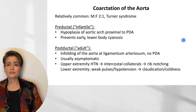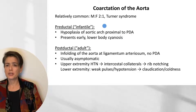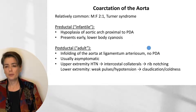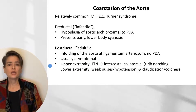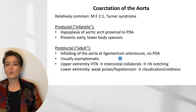Coarctation of the aorta is relatively common, affects males more than females, and is associated with Turner syndrome. There are two types: pre-ductal and post-ductal. The pre-ductal, also called infantile, tends to present early with lower body cyanosis and is characterized by hypoplasia of the aortic arch proximal to a patent ductus arteriosus. The post-ductal, or adult coarctation, is due to an infolding of the aorta at the ligamentum arteriosum with no patent ductus arteriosus. These patients are usually asymptomatic, but careful clinical exam reveals that their upper extremities are hypertensive compared to the lower extremities. This upper extremity hypertension can lead to intercostal collaterals, which put pressure on the bones of the chest, leading to rib notching.